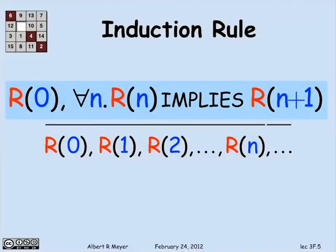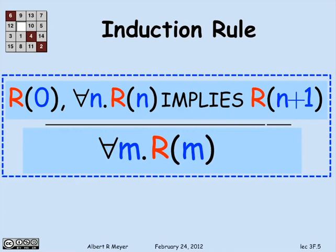There's a much more concise way to express both these antecedents and the conclusion using quantifiers. The antecedents can simply be stated by two predicate formulas: R(0), and for all n, R(n) implies R(n+1). That's a summary of the rule. The conclusion — that R(0), R(1), and so on all hold — is simply expressed as: for all m, R(m) holds. This is the form of the induction rule, where the variables range over the non-negative integers.